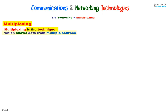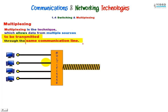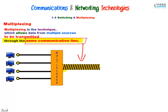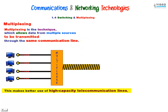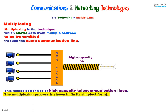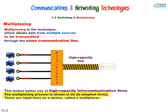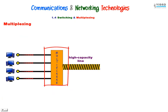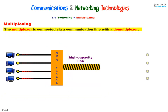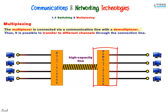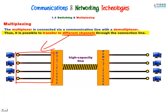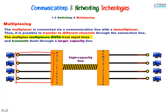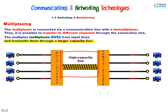Multiplexing is the technique which allows data from multiple sources to be transmitted through the same communication line. So we have four computers, a multiplexer, and the same communication line. This makes better use of high-capacity telecommunication lines like fiber optic. The multiplexer is connected via a communication line with a demultiplexer, making it possible to transfer different channels through the connection line. The multiplexer multiplexes data from input lines and transmits them through a larger capacity line.